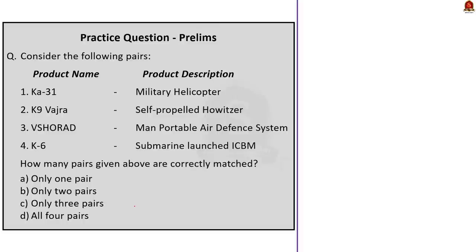Now let's take the next question — a pair-based question on defense products. Pair 1: KA-31 — military helicopter. Pair 2: K9 Vajra — self-propelled howitzer. Pair 3: Vajra — man-portable air defense system. Pair 4: K6 — submarine-launched ICBM. All four pairs are correctly matched, so the correct answer is option D.